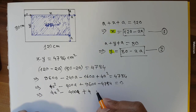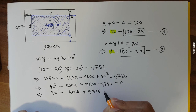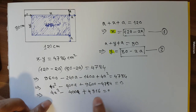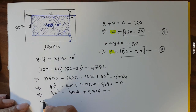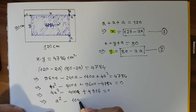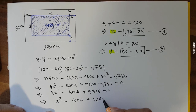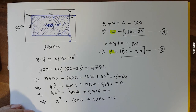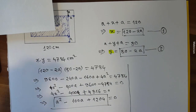Simplifying further: 4a squared minus 400a plus 4816 equals 0. Dividing everything by 4, the simplified equation becomes: a squared minus 100a plus 1204 equals 0. This is a quadratic equation.